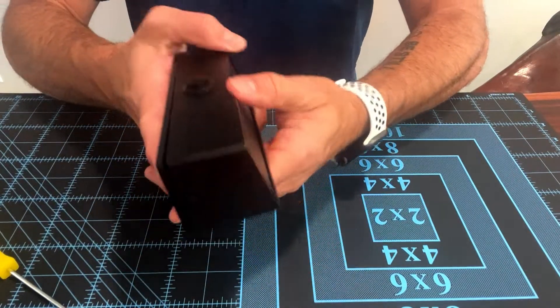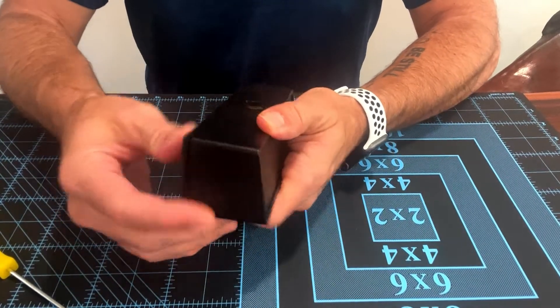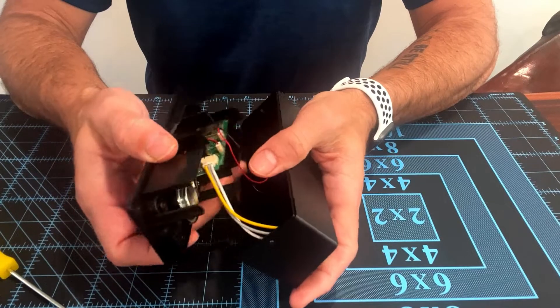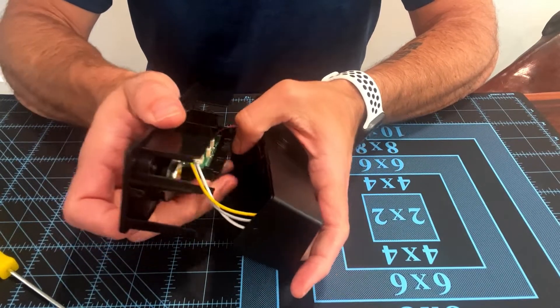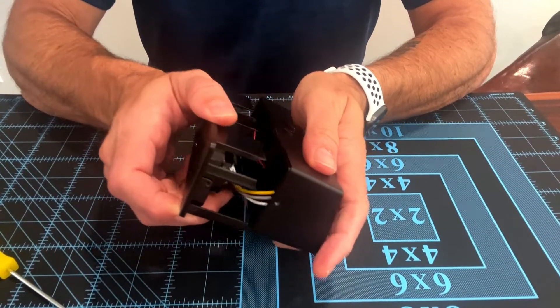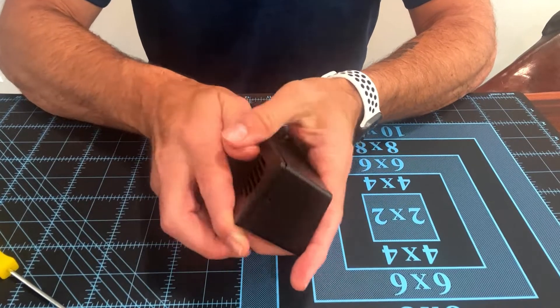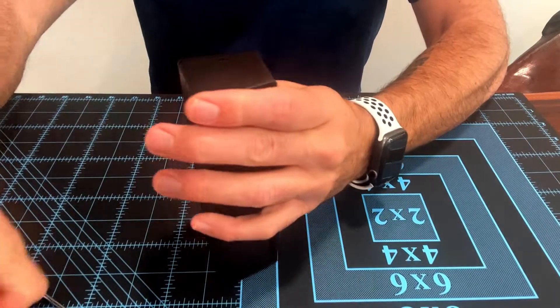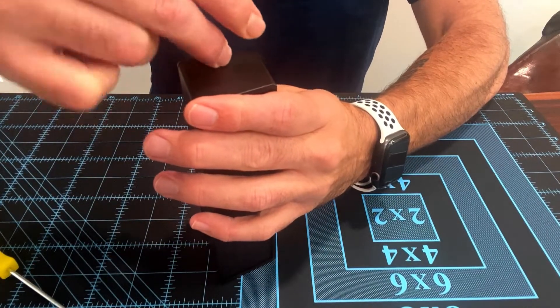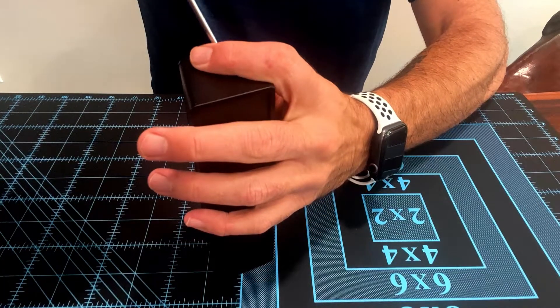If it doesn't feel like it went fully together, you may have caught a wire. Just open it back up, make sure the wires aren't caught on anything, and then slide it back together and put your two screws in on the outside. And that is how to fully disassemble and reassemble SugarPixel if you need to replace any components.